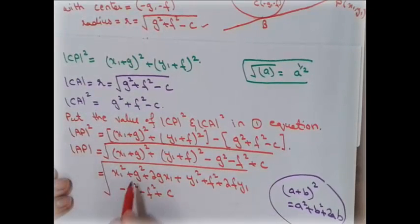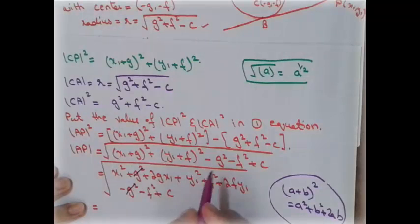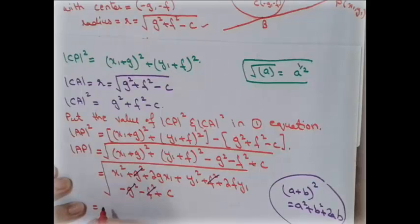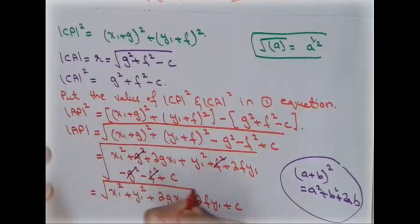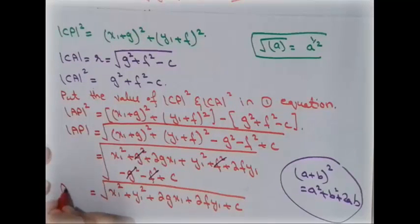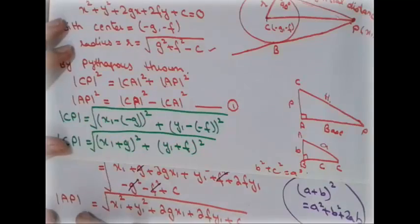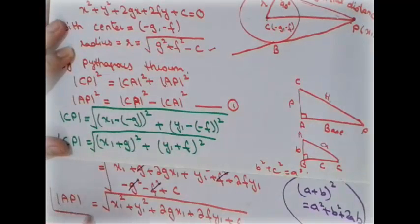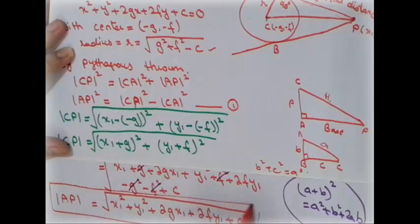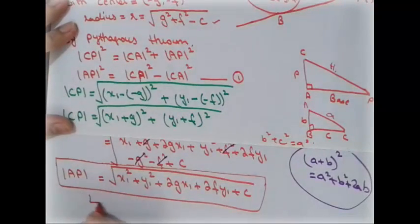The g² terms cancel with −g², and the f² terms cancel with −f². So we are left with AP = √(x₁² + y₁² + 2gx₁ + 2fy₁ + c). This is the tangential distance, also called the length of the tangent to a circle.